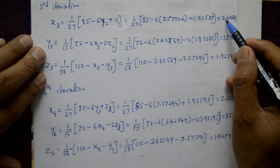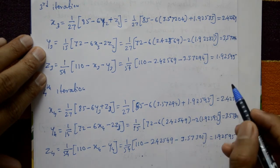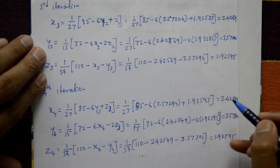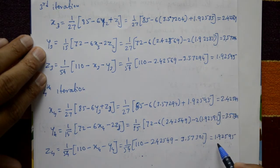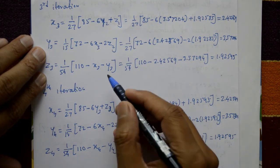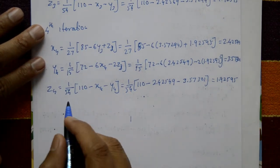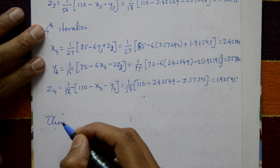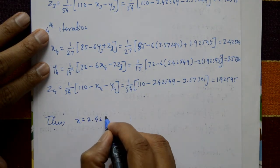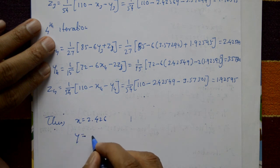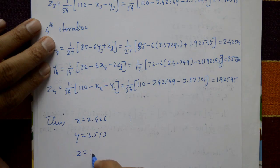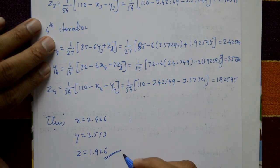Comparing third and fourth iteration values: x ≈ 2.425, y ≈ 3.573, z ≈ 1.925 — they are approximately the same to three decimal places. Since the last two iterations agree, the required solution is x = 2.426, y = 3.573, z = 1.926. This is the required solution. Thank you.